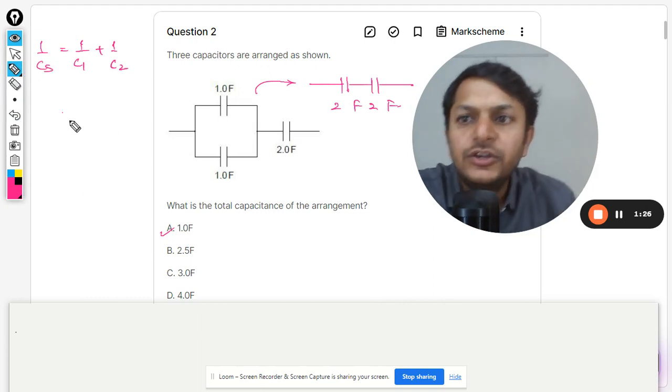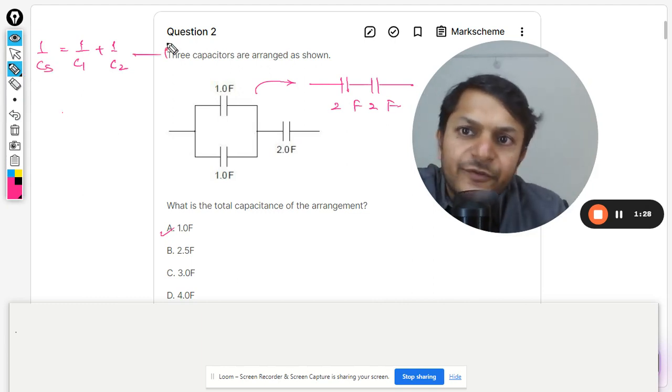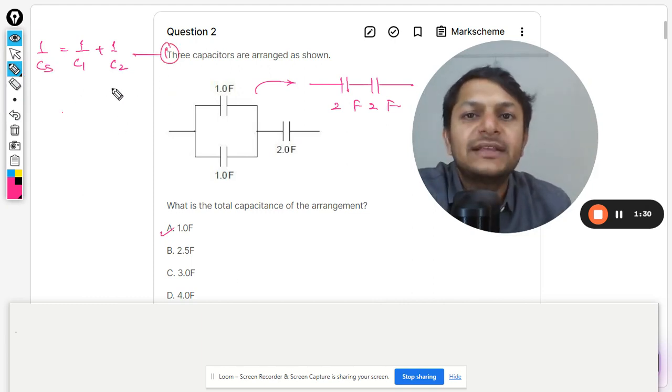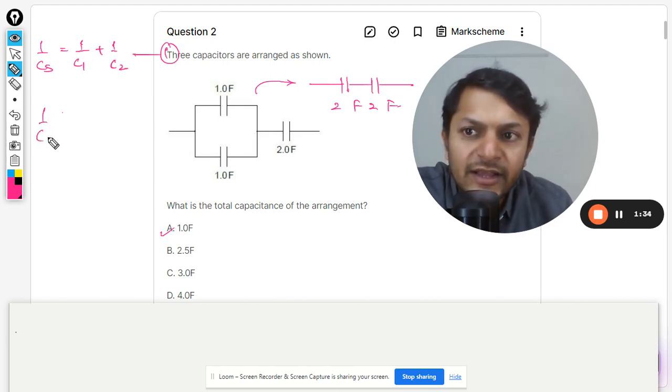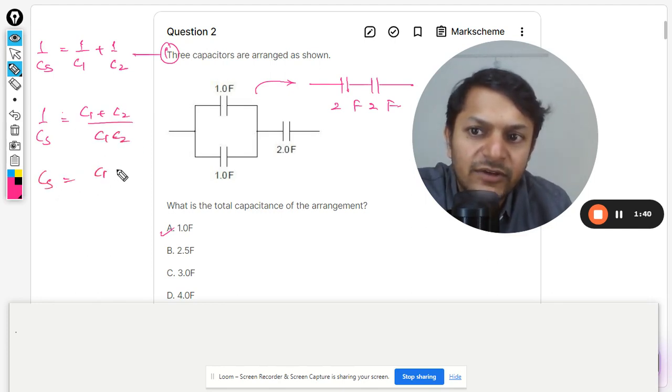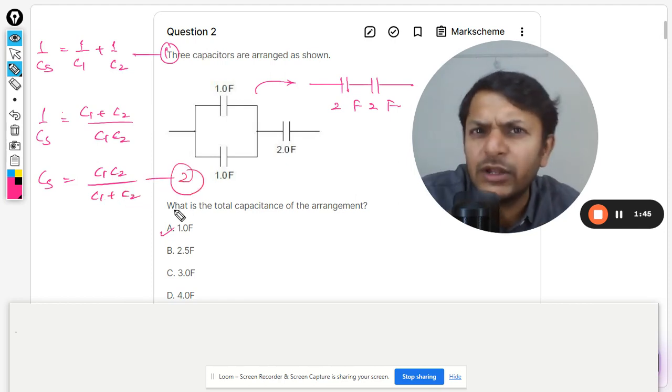And how do you see? Number one is this formula. If these two capacitors are equal, like one by c_s, you take the LCM here, it will be c1 times c2. So c_s will be given by c1 times c2 divided by c1 plus c2. So this is the second very important formula that you can use.